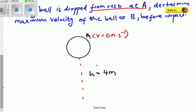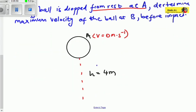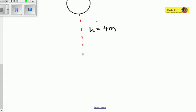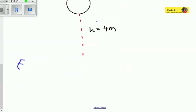The height is 4 meters at which this ball is dropped. Now they want you to calculate the maximum velocity. They did not ask us to calculate the mechanical energy but the maximum velocity. Remember we expanded this formula, and parts of our formula had V representing velocity. We're going to use the law of conservation of energy, which states that mechanical energy at A equals the mechanical energy at B.